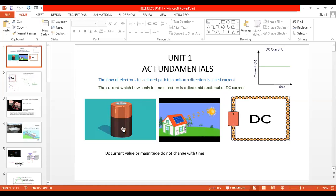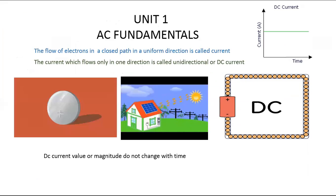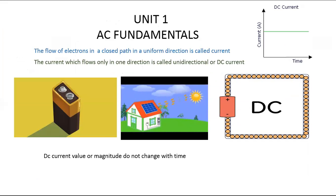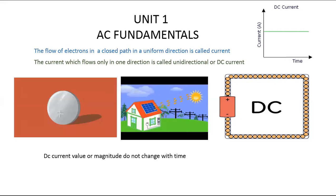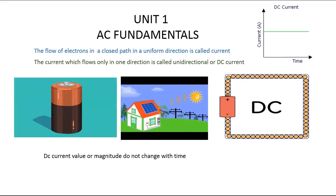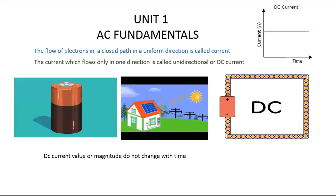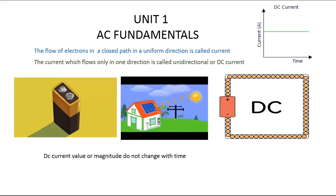Whenever any object is constant, it generates DC current or unidirectional current. A battery is not moving, it is constant. Inside your cell phone you have a battery, so batteries generate DC current — they convert chemical energy to electrical energy. Solar panels also generate DC current by converting sunlight energy into electrical energy. The current always flows from positive terminal to negative terminal.